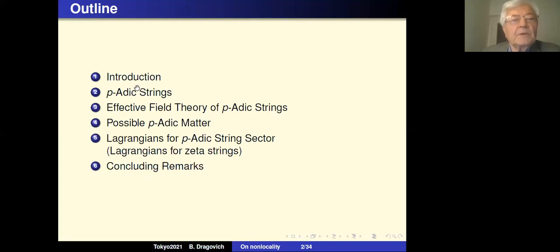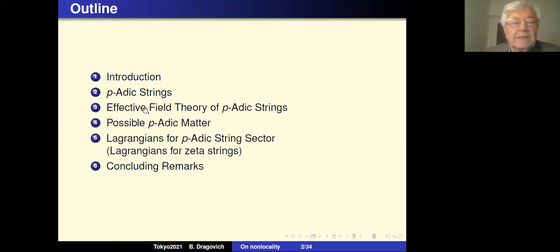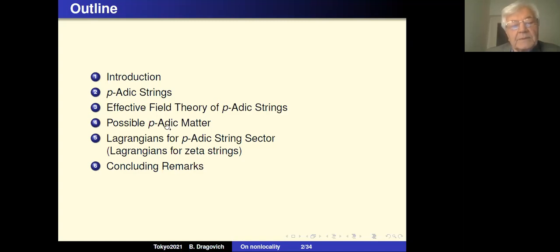Here is the plan of my talk. After a short introduction, I will speak about some basic properties of p-adic strings, then about the effective real theory of p-adic strings, and also about possible p-adic matter which I just obtained quite recently. Then I will speak about Lagrangians which can be constructed for the p-adic string sector, which I call zeta strings. At the end there will be some concluding remarks.